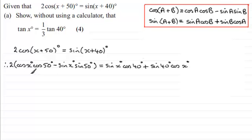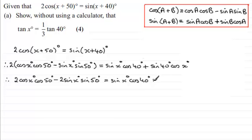Next, I'll expand the bracket here. And we're going to then have 2 cosine x times cosine of 50 degrees minus 2 sine x sine 50 degrees. And then this is equal to sine x degrees cosine of 40 degrees plus the sine of 40 degrees and then the cosine of x degrees.